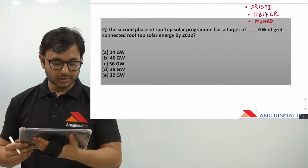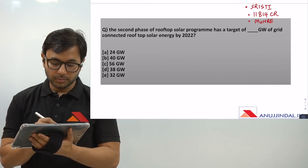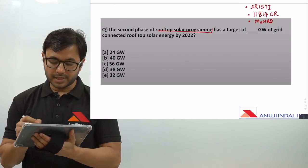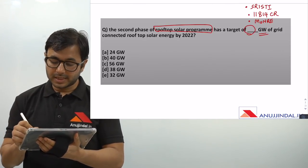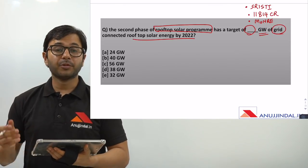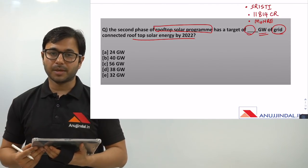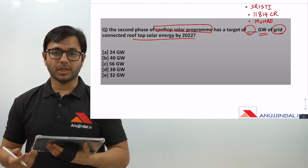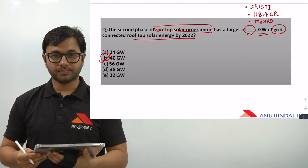Let's talk about the first question. The question says: the second phase of rooftop solar program has a target of dash gigawatts of grid-connected rooftop solar energy by 2022. If you know the answer — it's a very factual question — put it in the comment section below. The answer to this question is 40 gigawatts.